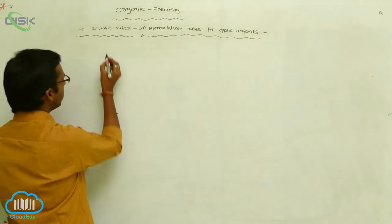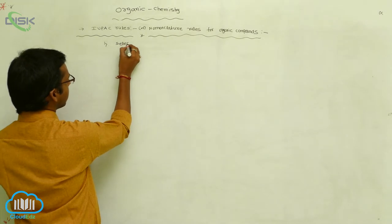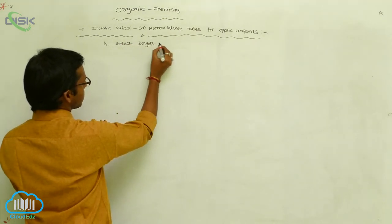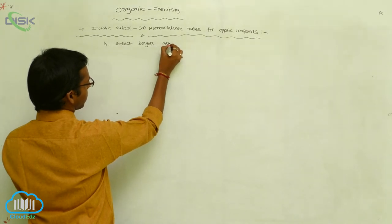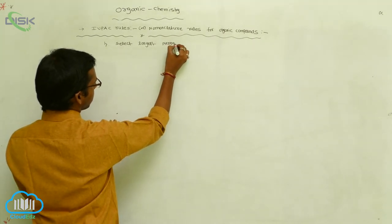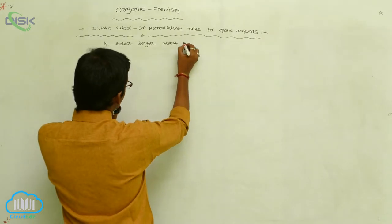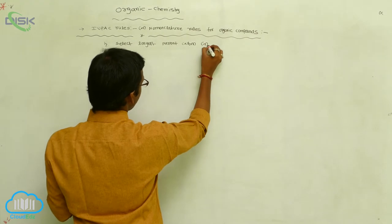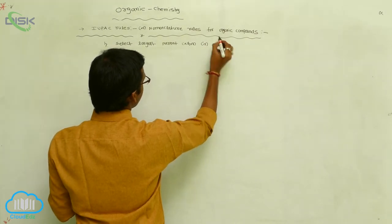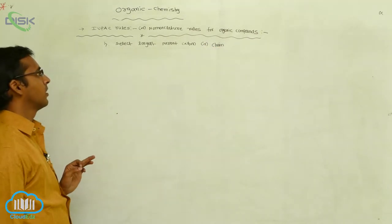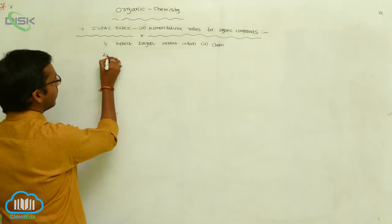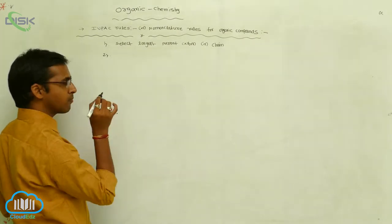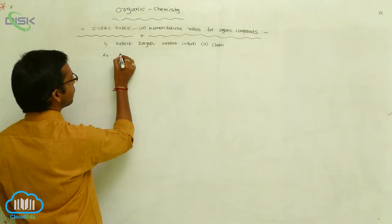The first rule: select the longest parent carbon chain, also called the longest chain. The next rule: first give preference to the functional group, meaning give the functional group the lowest possible number.